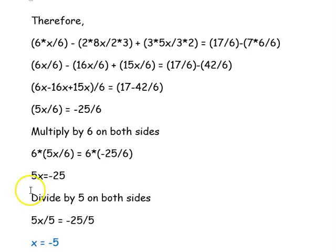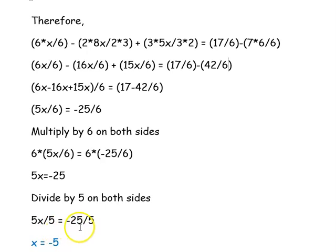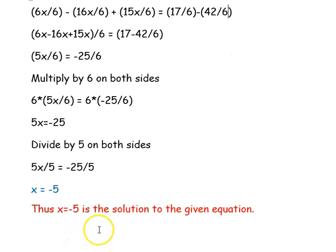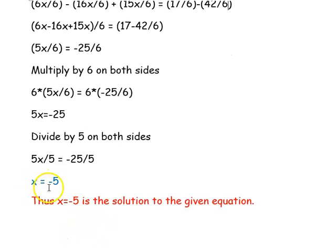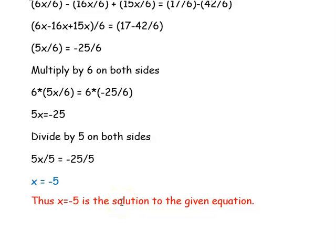Next step: we divide by 5 on both sides to isolate the variable x. So 5x divided by 5 equals minus 25 divided by 5, giving x equal to minus 5. Thus, x equal to minus 5 is the solution to the given equation.